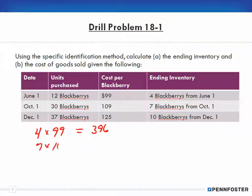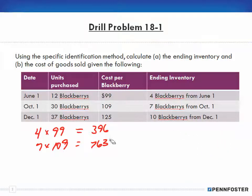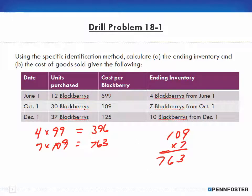Then I have 7 blackberries at $109. I can do the same thing: 7 times 100 is 700, and I have 9 more per unit times 7, which is 63 — so that's $763. These little quick shortcuts mean I don't need a calculator. I could have taken 109 multiplied by 7 the long way, but it was easier to do 700 plus 63 mentally.